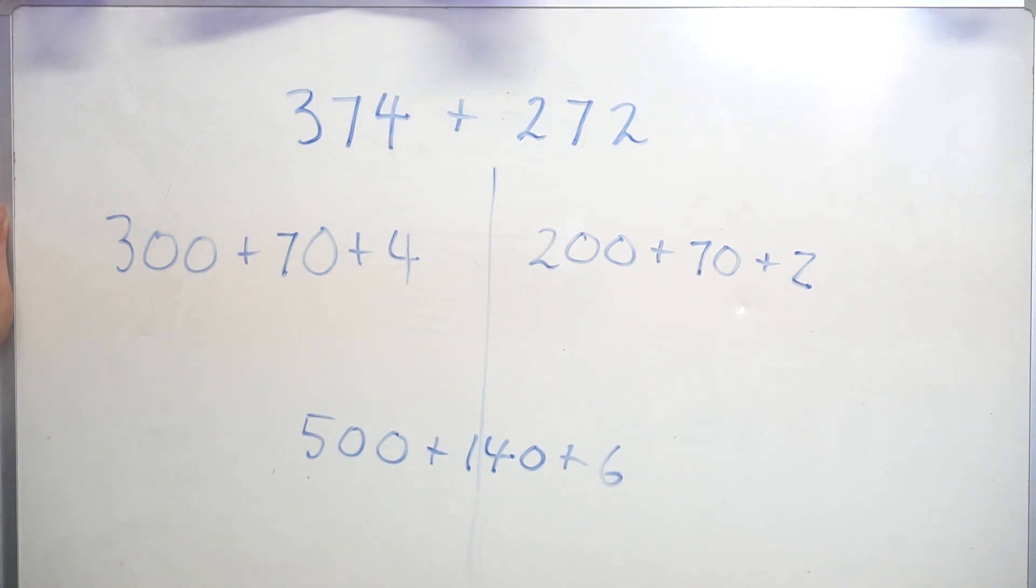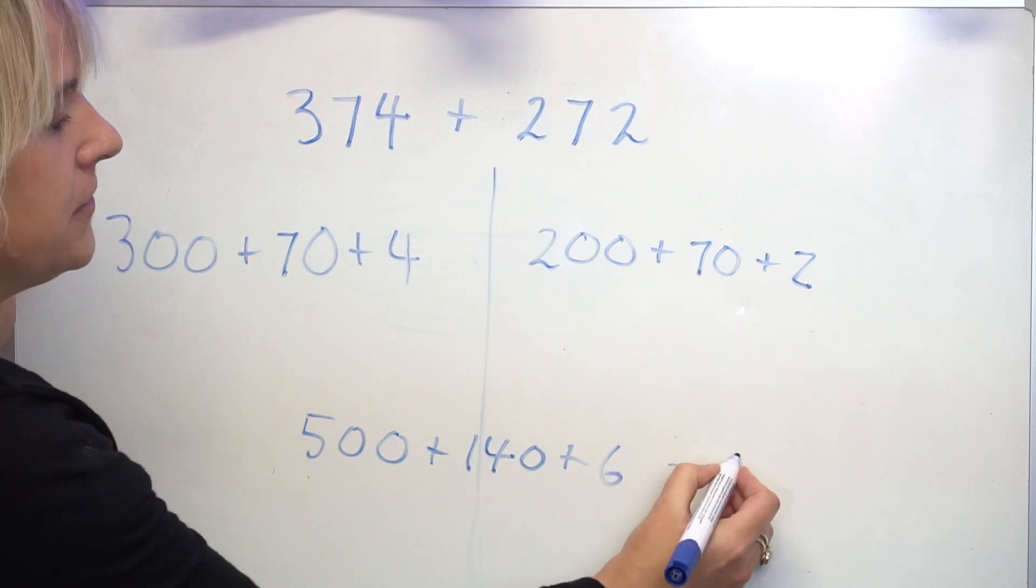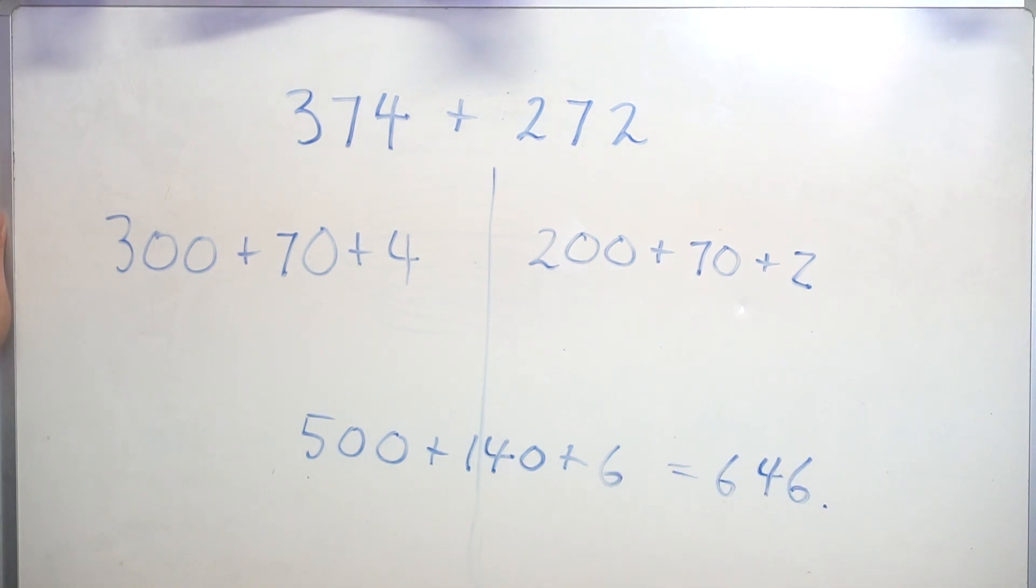Here I can either do one of two things. I can either add 500 plus 140 equaling 640 and add the 6 which equals 646.